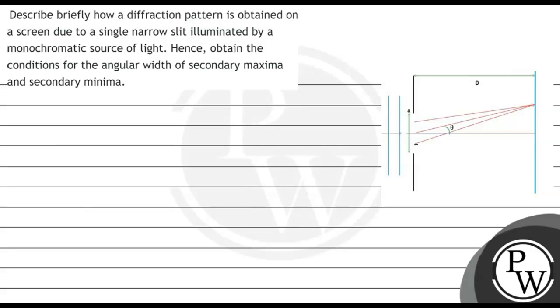Hello, let's see this question. It says describe briefly how a diffraction pattern is obtained on a screen due to a single narrow slit illuminated by a monochromatic source of light. Hence obtain the conditions for the angular width of secondary maxima and secondary minima. The key concept which we are going to use here is diffraction.